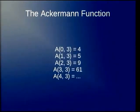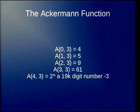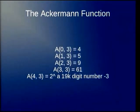The first digit is the one you really have to be careful of. When we start iterating through the Ackermann function, we get four, five, nine, sixty-one, two to a nineteen-thousand-digit number minus three. A lot of people have asked me about the Ackermann function — they say it's a cool function, but what can it do? Well, it turns out it's really good for crashing compilers and for compiler benchmarks.